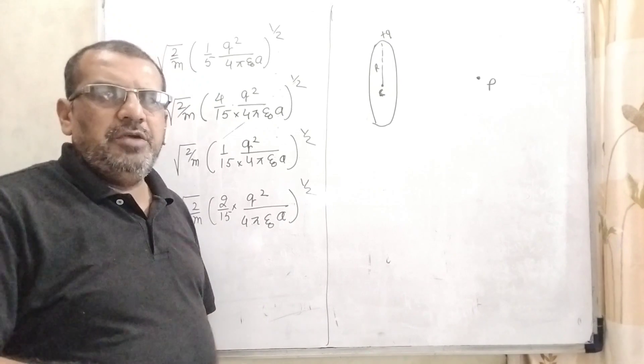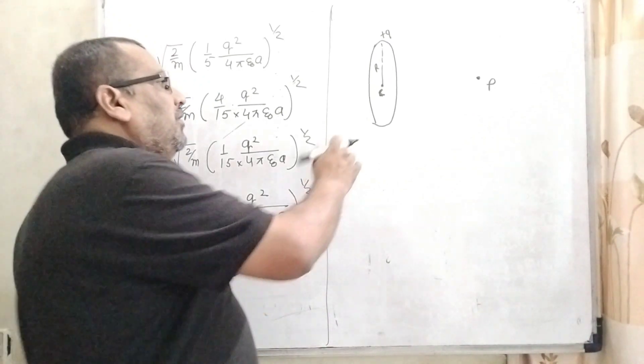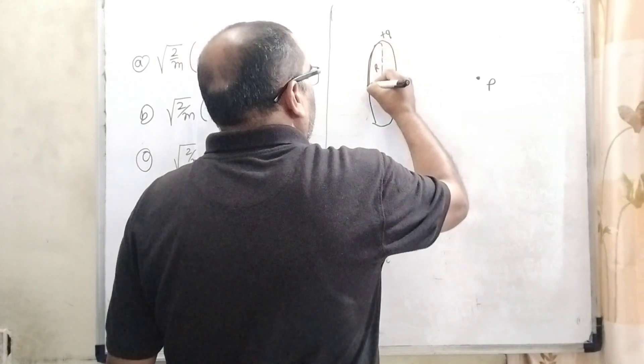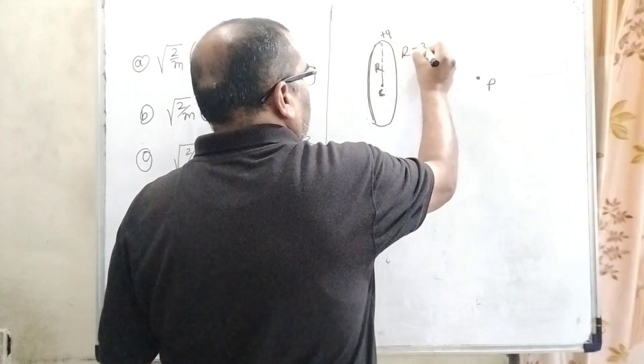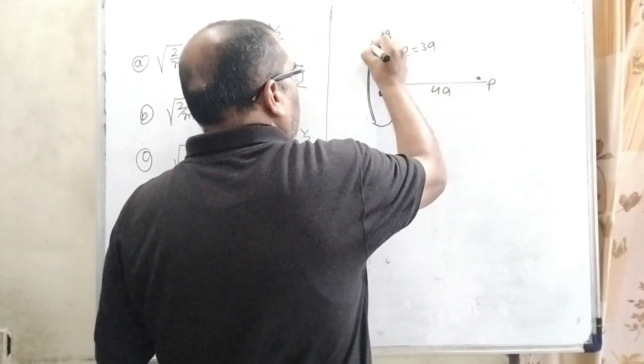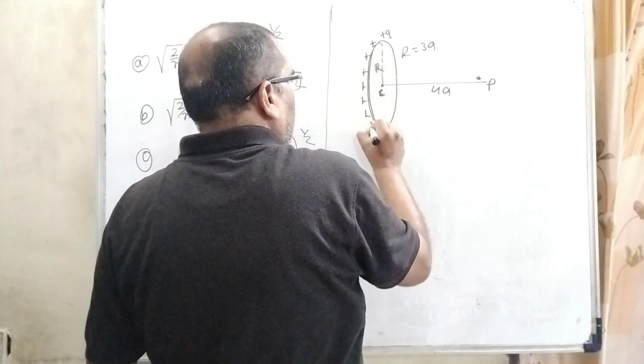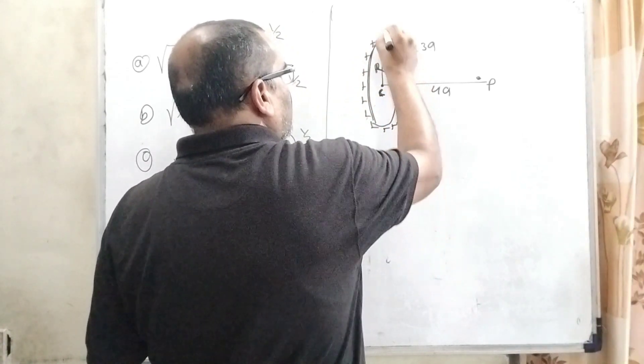This question is asked in JEE Mains 2019. What is the question? Here we have given a ring which has radius capital R, that is r equal to 3a, and the distance from point P is 4a. And here the uniformly charged ring, let's consider positive charge. This positive charge is q.